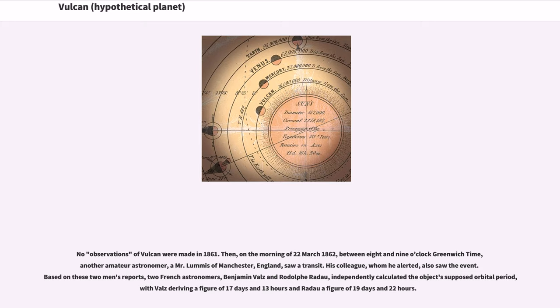No observations of Vulcan were made in 1861. Then, on the morning of March 22, 1862, between 8 and 9 o'clock Greenwich time, another amateur astronomer, a Mr. Loomis of Manchester, England, saw a transit. His colleague, whom he alerted, also saw the event.